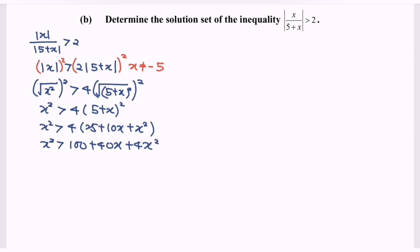Rearrange the situation. 4x squared minus x squared plus 40x plus 100 is less than 0. So finally we have 3x squared plus 40x plus 100 less than 0.